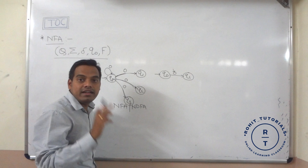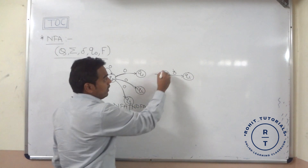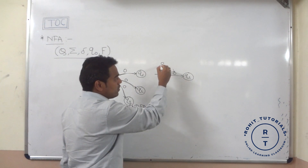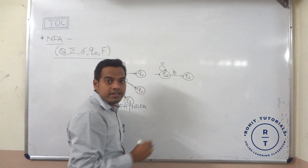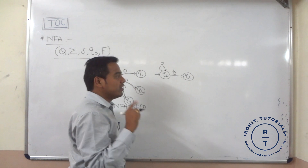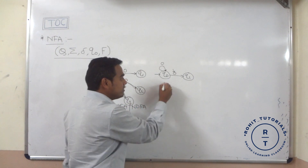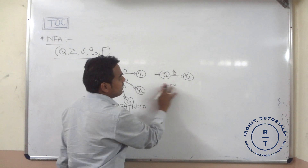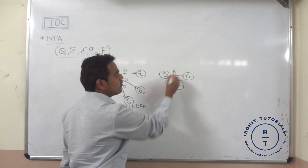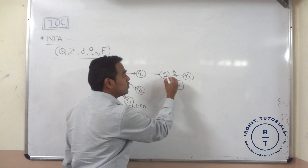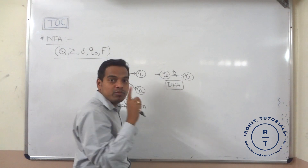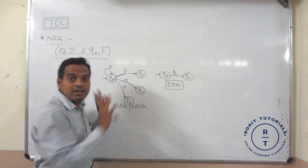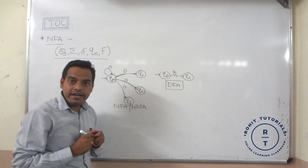Such a condition — multiple choices — is not available in deterministic finite automata. If we have drawn a 0 at q0 state self-loop, so q0 with 0 goes to q0, and again q0 with 0 goes to q1 — such a condition is not available in DFA. So this is called NFA. If we remove the self-loop, we call it simply DFA because there is no choice for the given input symbol. Only one move for the given input symbol is available, but in NFA multiple choices are available from the current state.